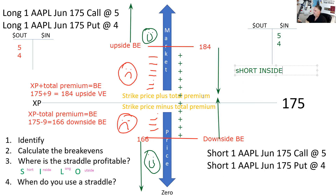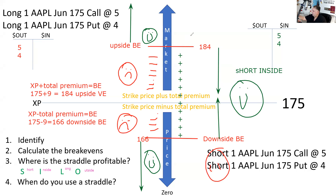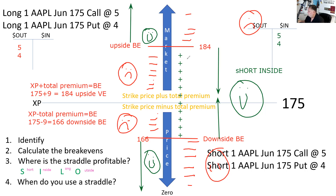Once we go outside of the break-evens, we've got a problem. This does expose the customer to unlimited risk because on the upside, the stock can go outside the break-evens by an unlimited amount. So for the short straddle, we expect a trading range — we expect Apple to stay between 184 and 166. That's our Score Four More on the straddle menu.